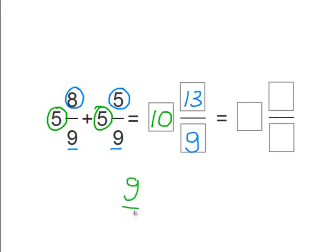So remember 9 ninths equals 1. So we can add 1 to the 10 now. So 1 plus 10 equals 11. And now we need to subtract 9 from the 13. So we know that is 4, and we keep the 9 the same. So our answer is 11 and 4 ninths.